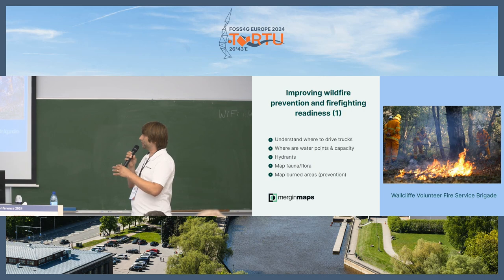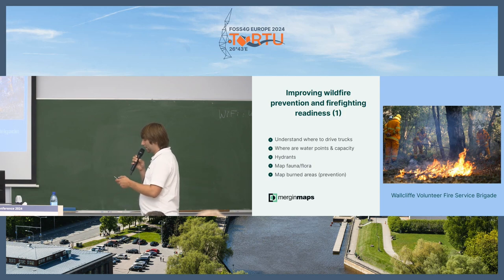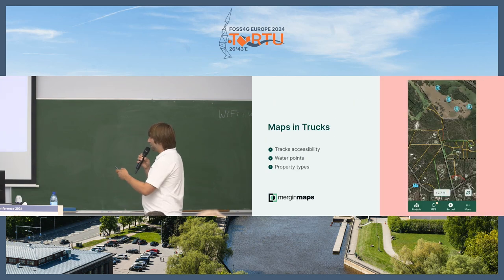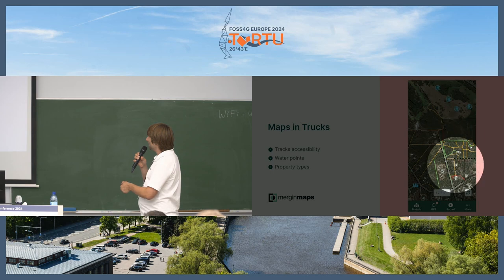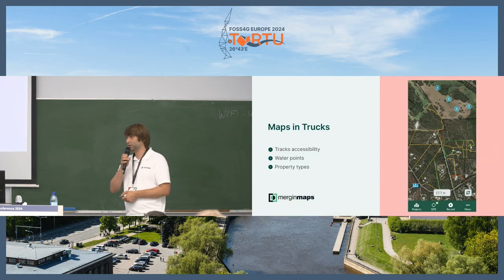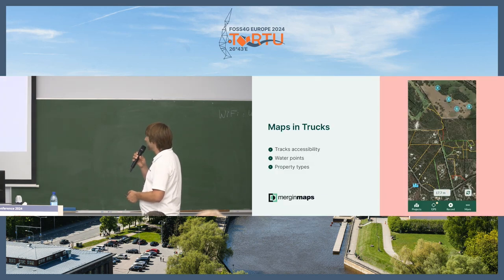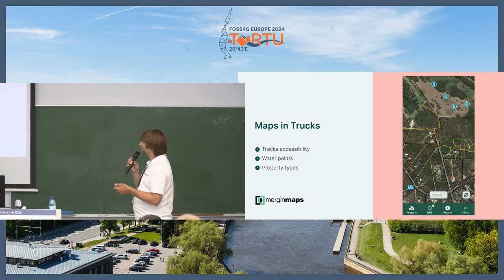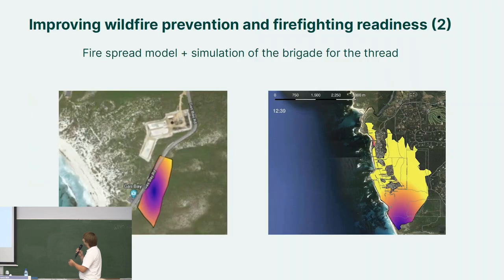This is their map from their QGIS project. You can see some water points here, and here you see the tracks. The color represents which type of vehicle can drive on the track. There are also some other points. They map these areas and properties as well, which are not shown on this particular part of the map.